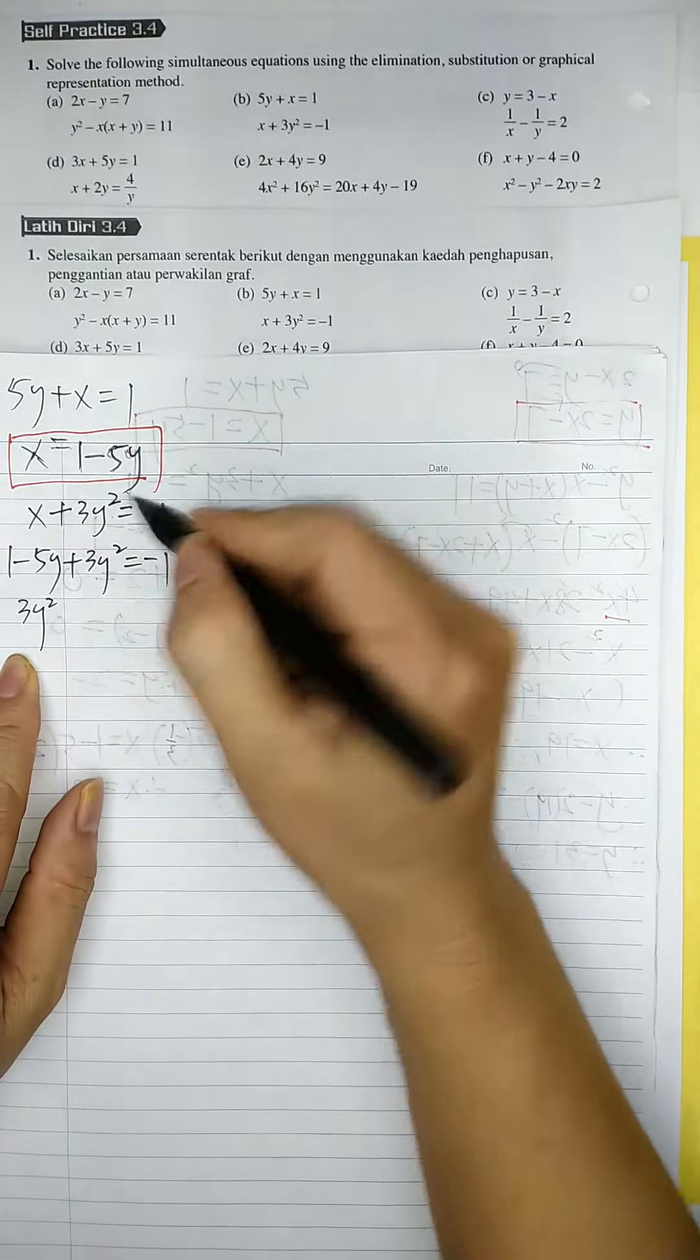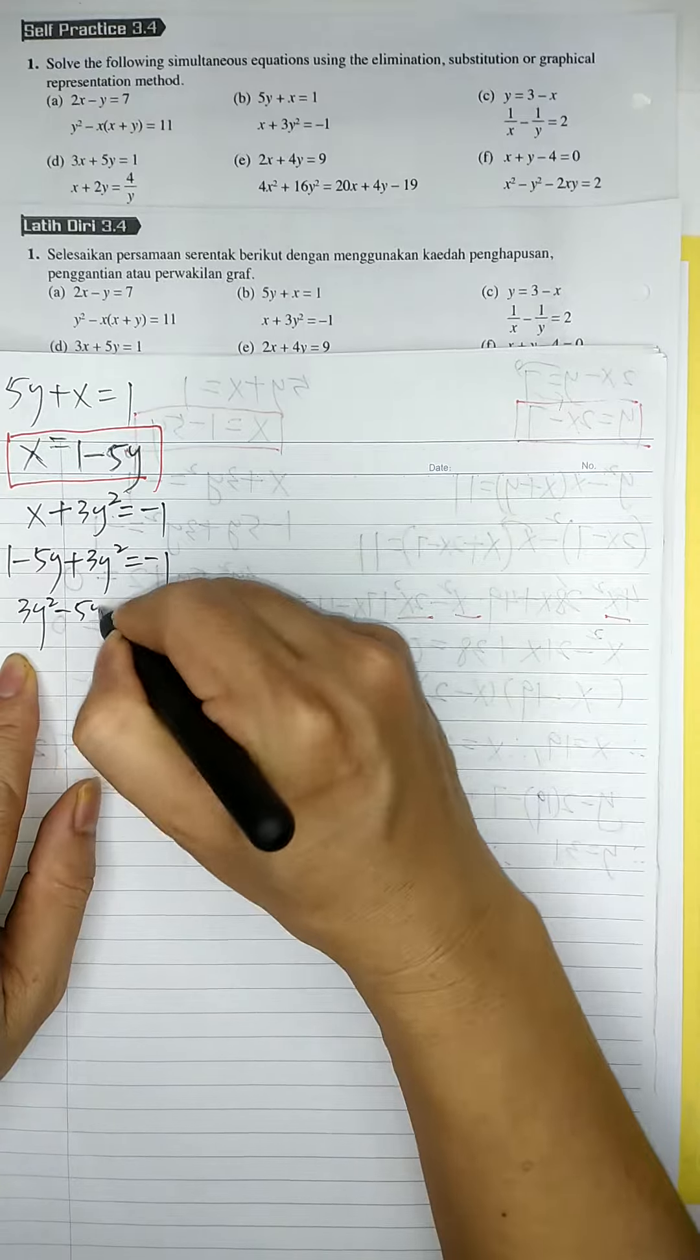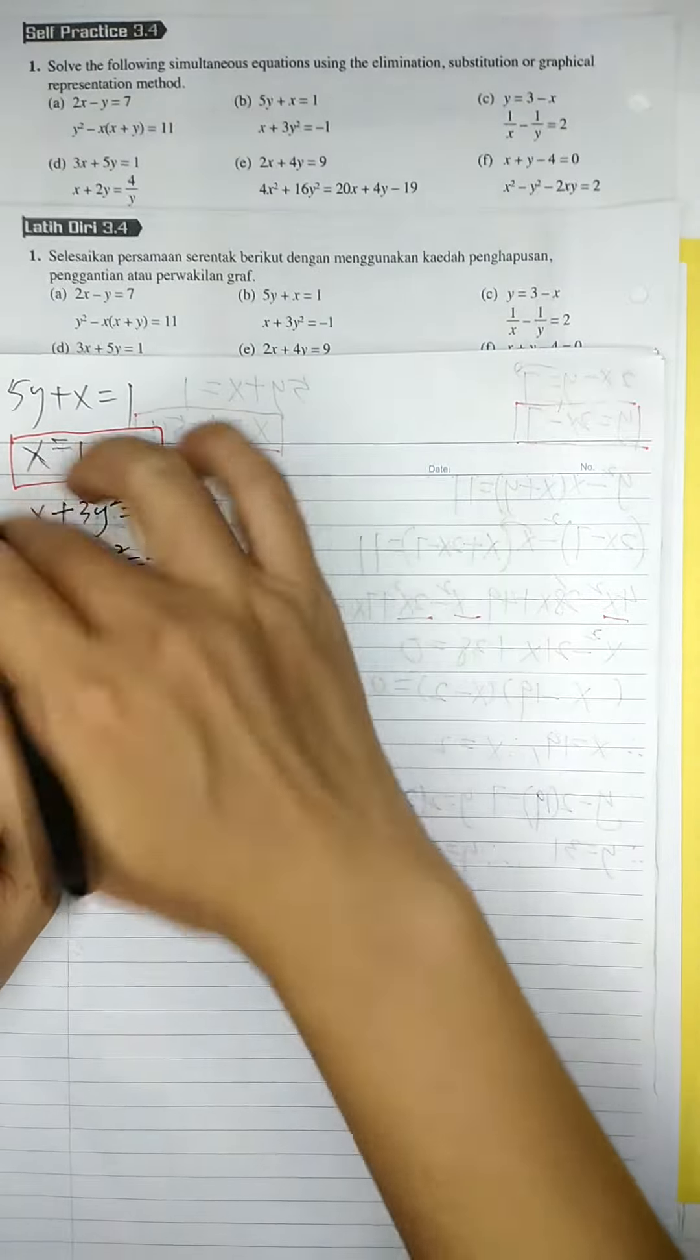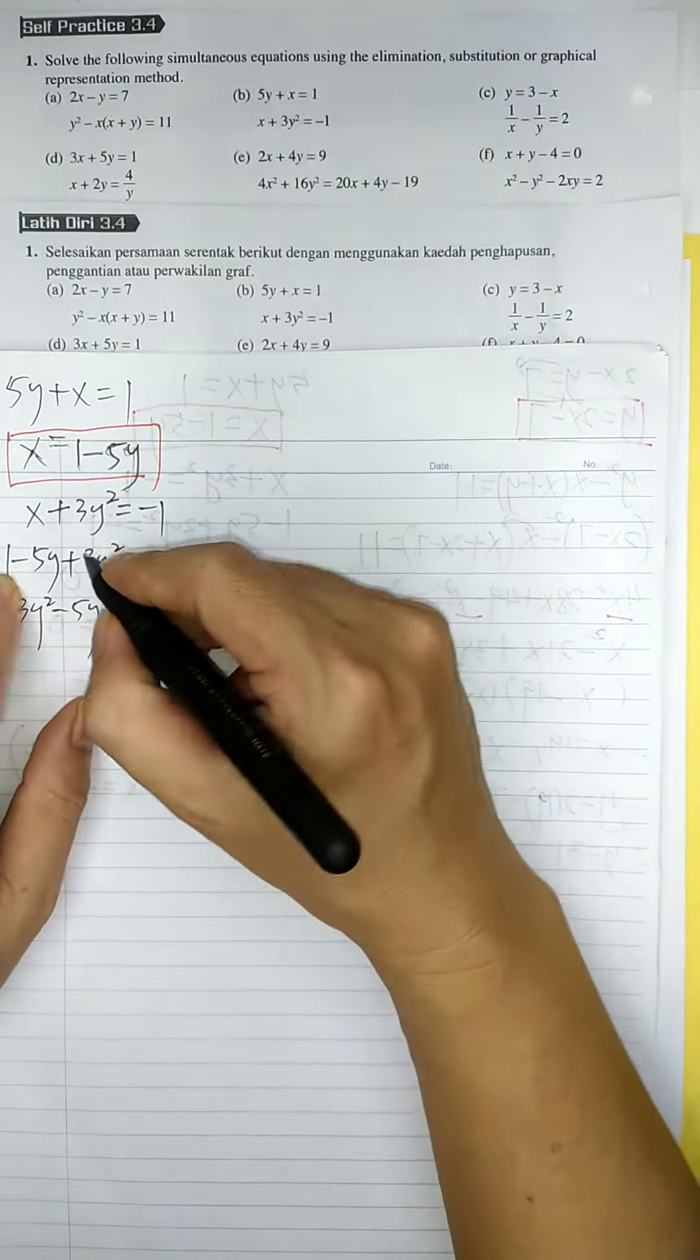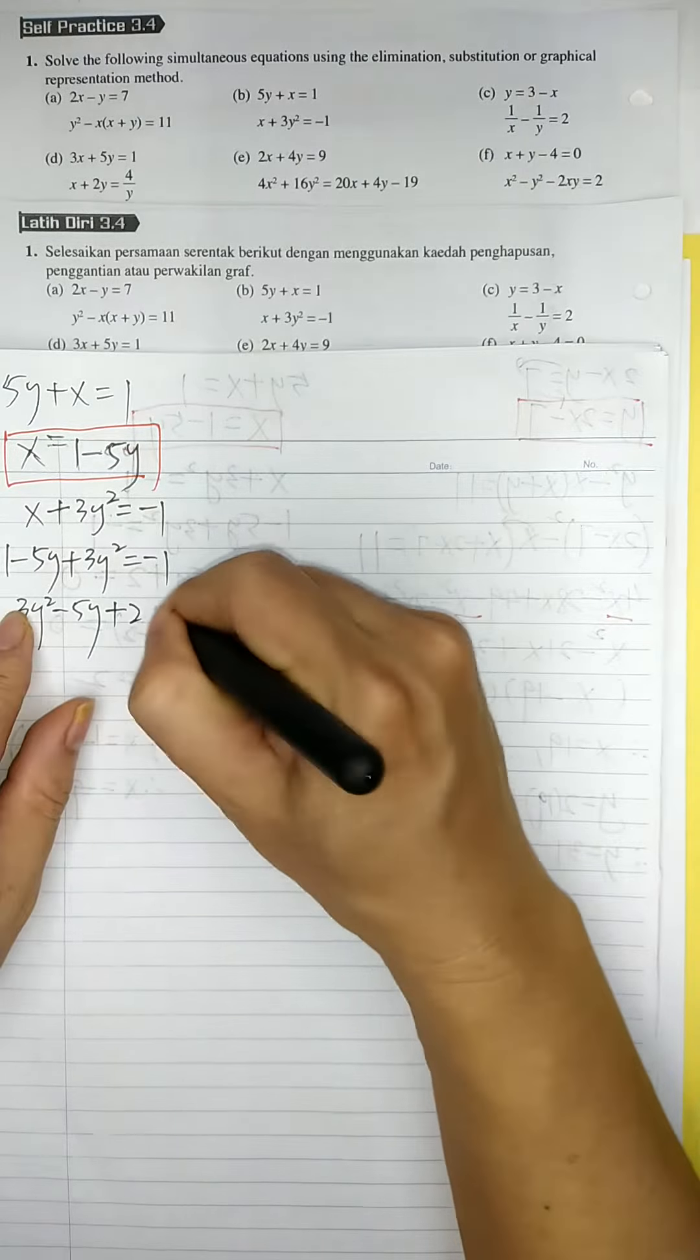So 3y squared minus 5y, and negative 1 moved to the other side. Positive 1 plus positive 1 is 2, equal to 0.